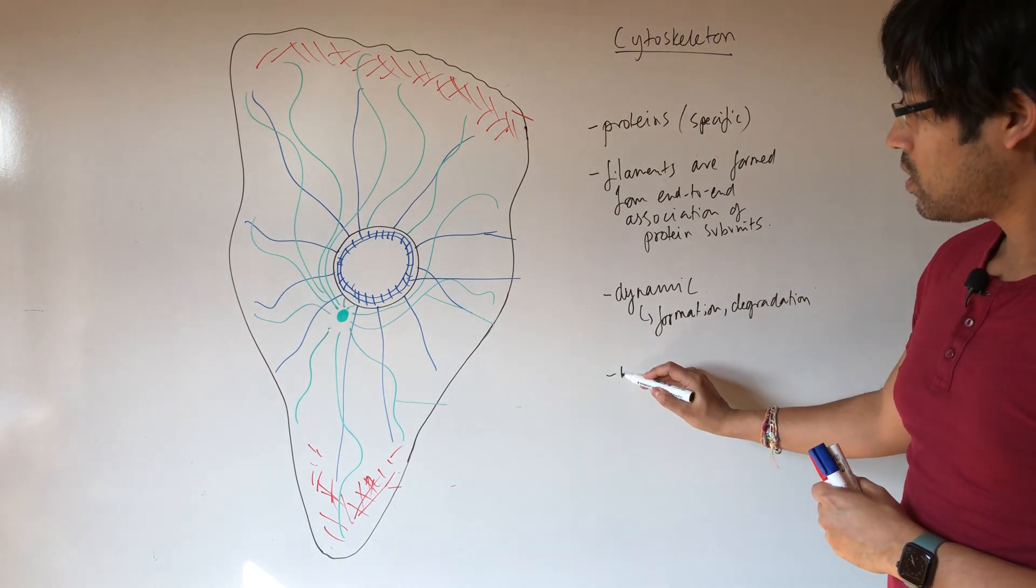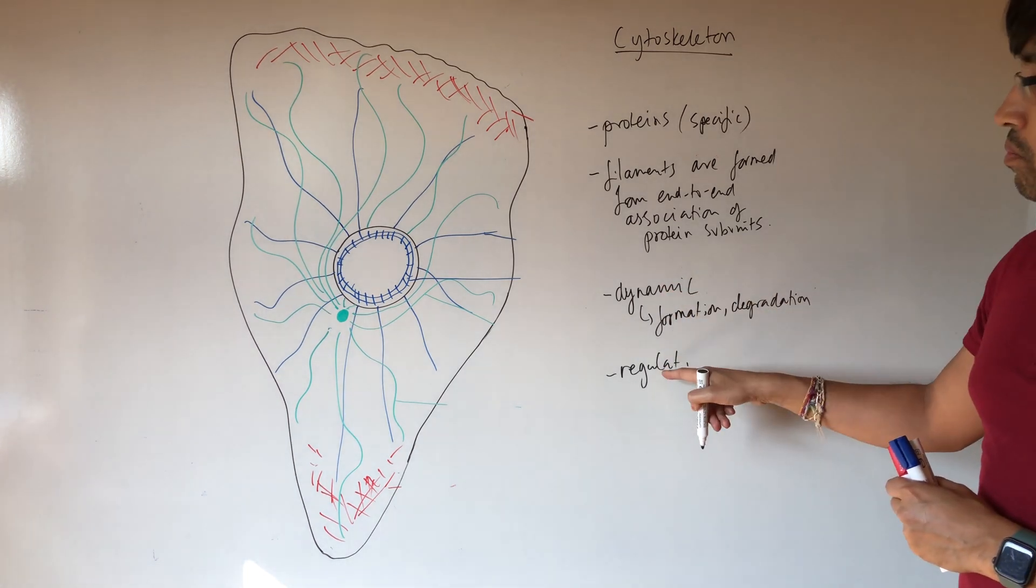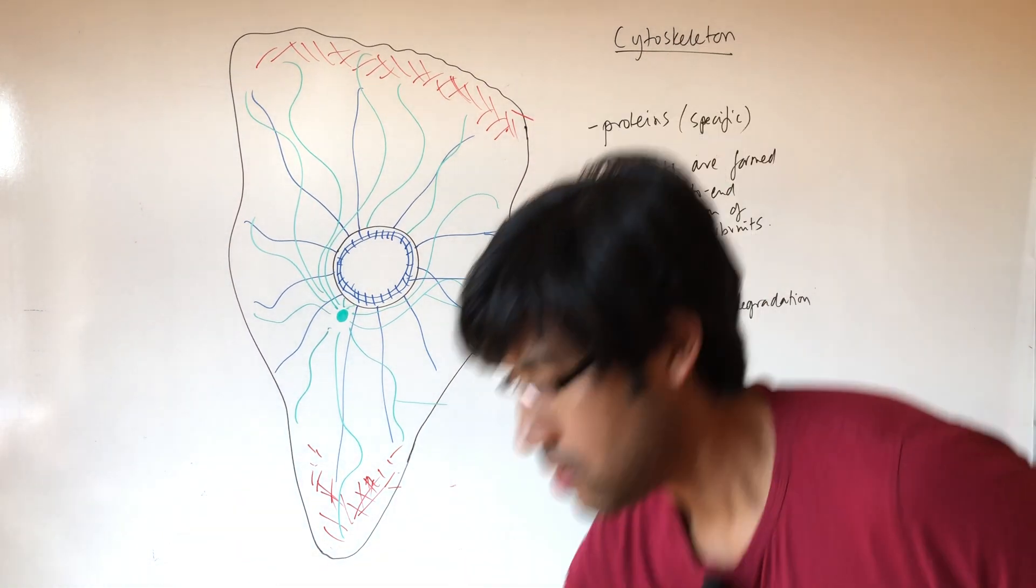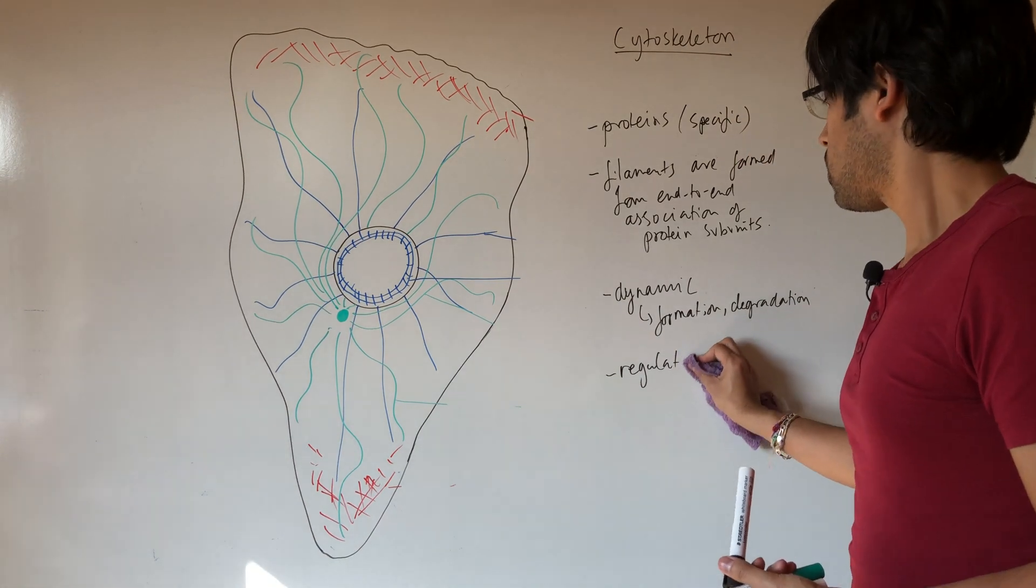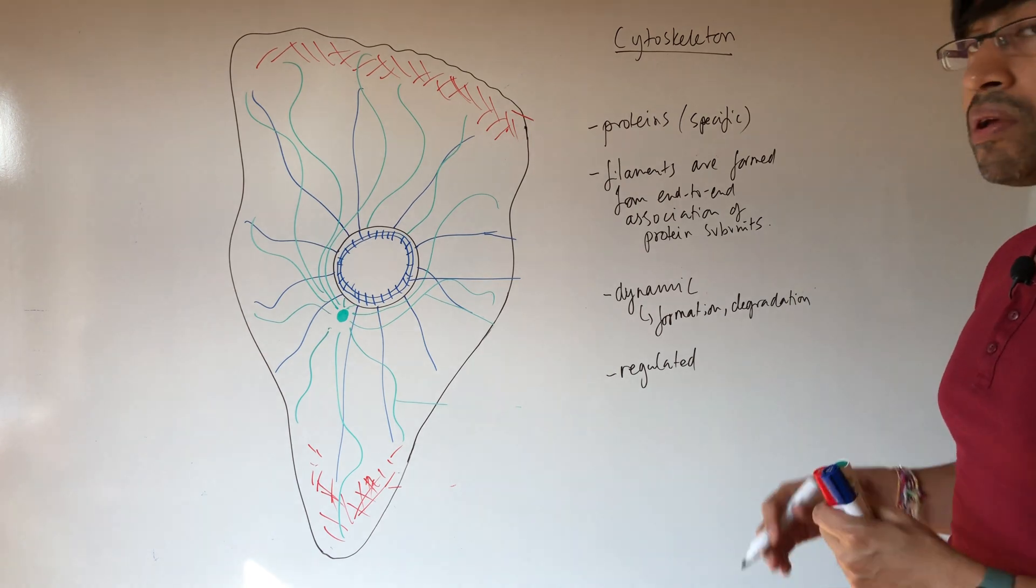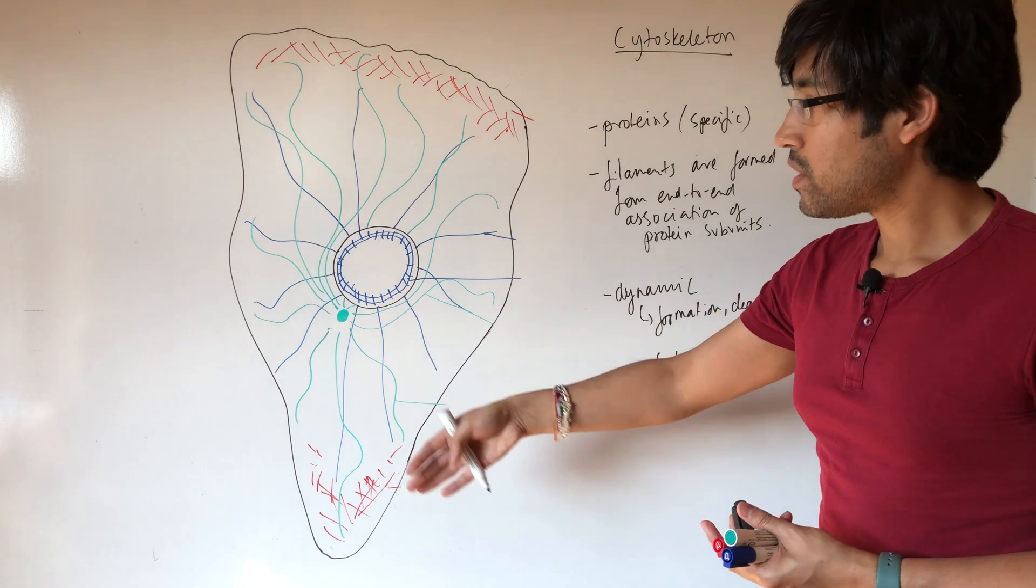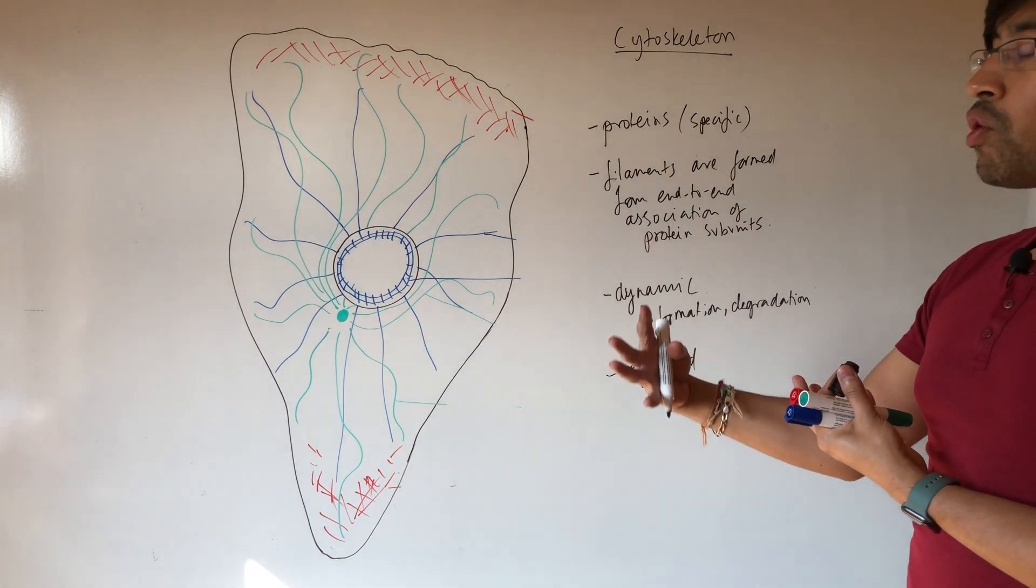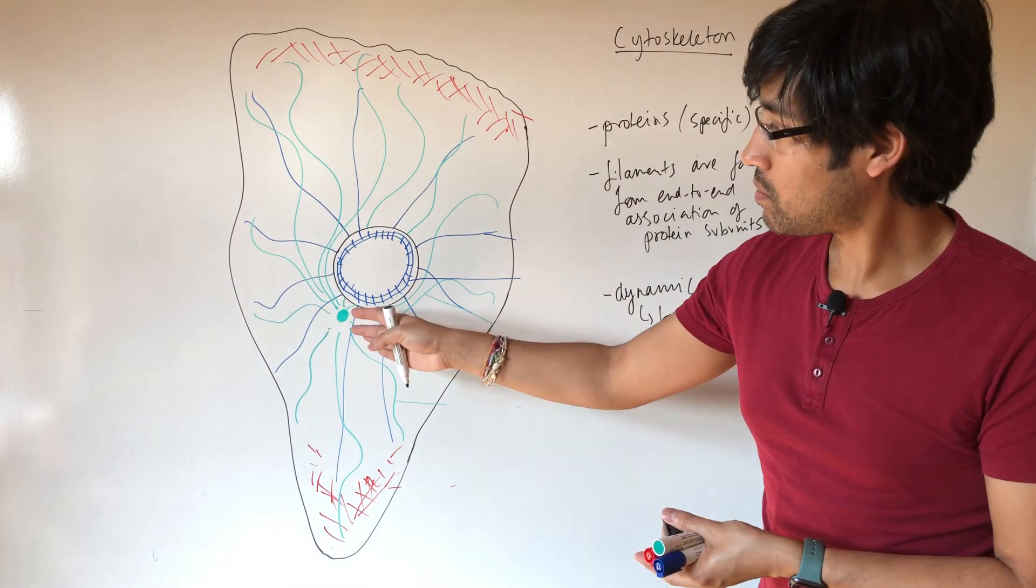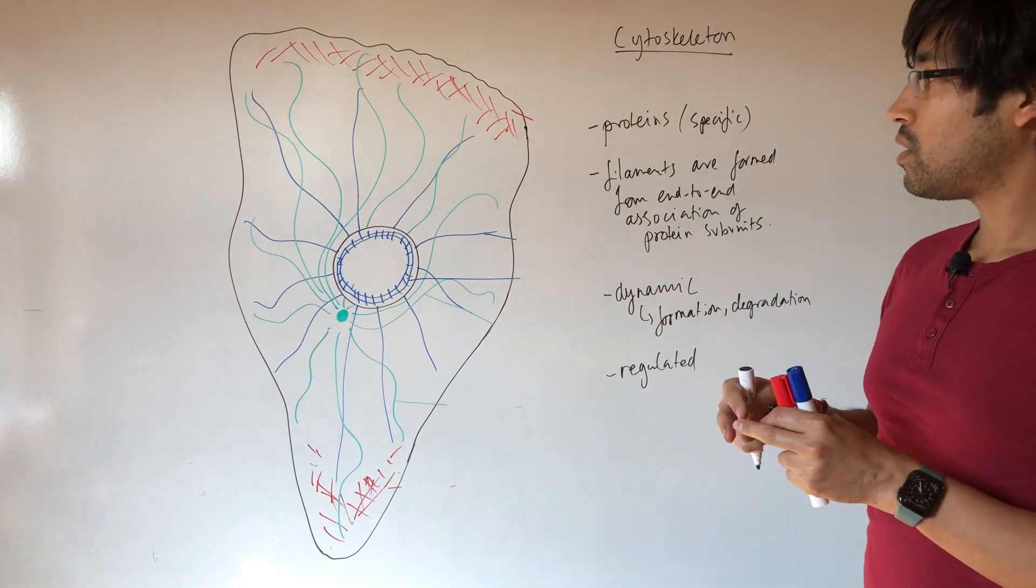Finally, that dynamic nature means that these structures can be regulated. So if we're thinking about a cell, let's say the cell is about to go into mitosis. Well, mitosis requires a specific reorganization of the cytoskeleton to allow mitosis to occur.